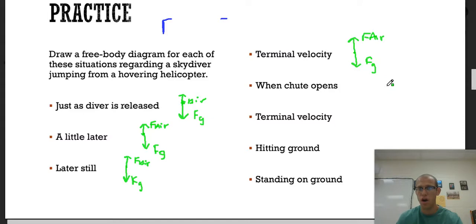When the chute opens, our air resistance is going to get very, very big and it's going to slow us down. So air resistance is going to get big. Our force of gravity, that arrow, should not change ever. It's always going to be the same force.